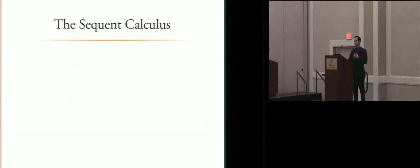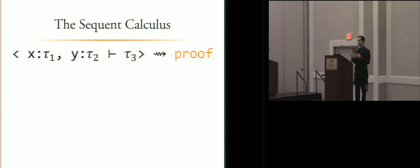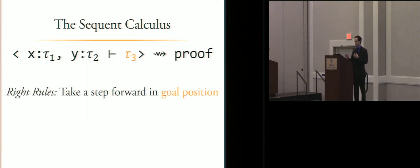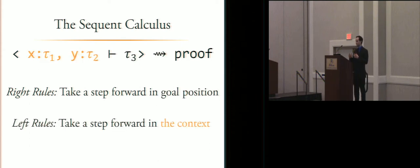And this is a very popular framework for performing proof search. It represents the theorem we want to prove, and finally, the proof itself. Right rules take a step forward in goal position. The second benefit of the sequent calculus over other methods is that both left and right rules work together.